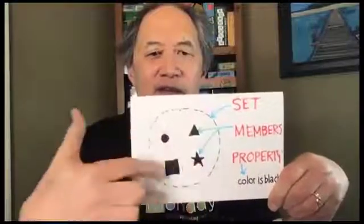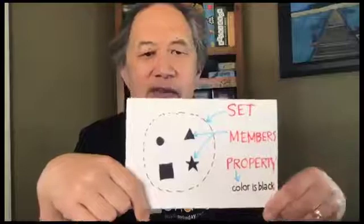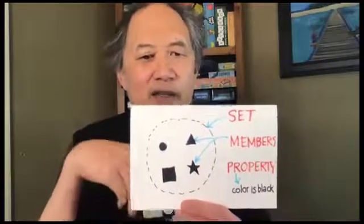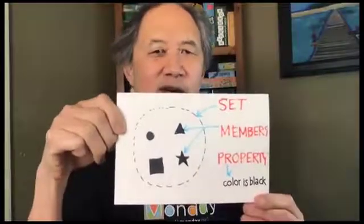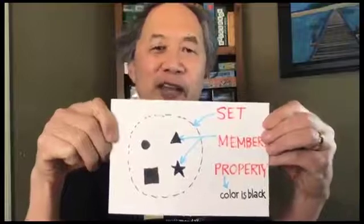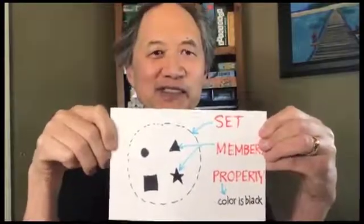I encourage you to keep playing this at home. A few words to know: in mathematics, a group of things is called a set, and the things in it are called the members of the set. If the things in your set all have something in common, the members are said to share a property — for example, the members all share the property that the color is black. And if this reminds you of the card game Set, we're going to play that in a future session!